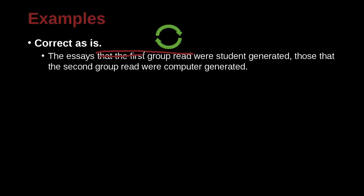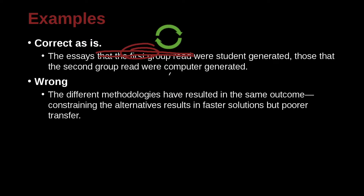If you took this out, then you would say 'the essays were student-generated.' That's true, but it's only the first group that were student-generated, so it's very specific. It cannot have two commas.